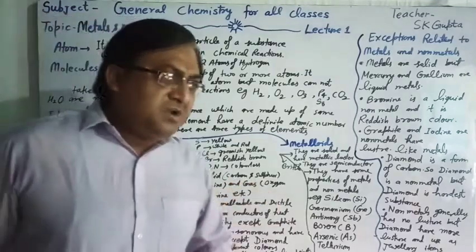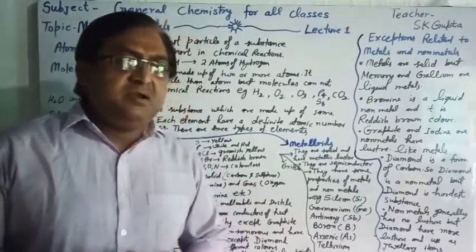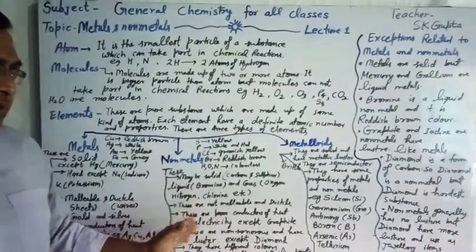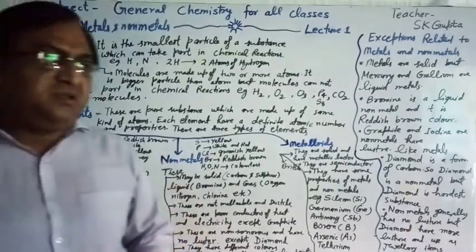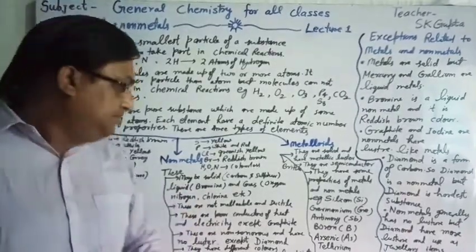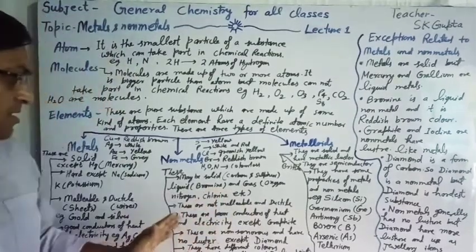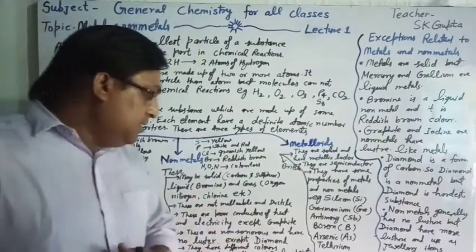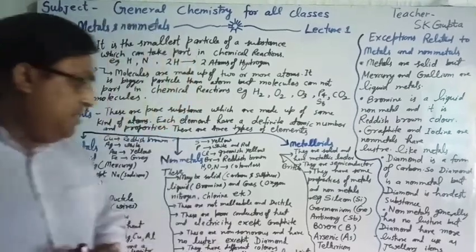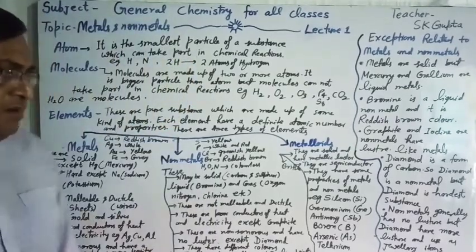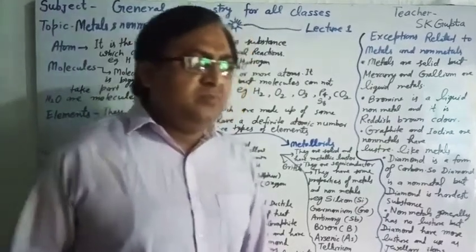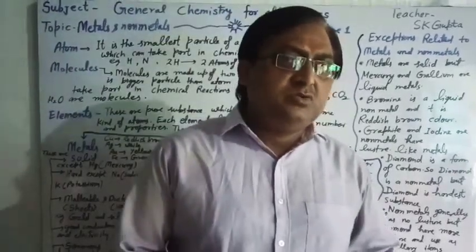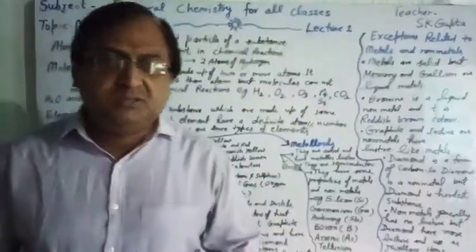Non-metals are non-malleable and not ductile. They are poor conductors of heat and electricity, non-sonorous, and have no luster. Non-metals have low melting and boiling points because the density of non-metals is very less.